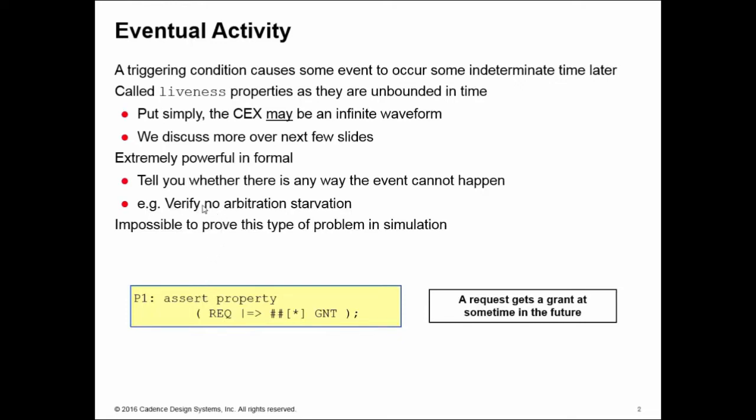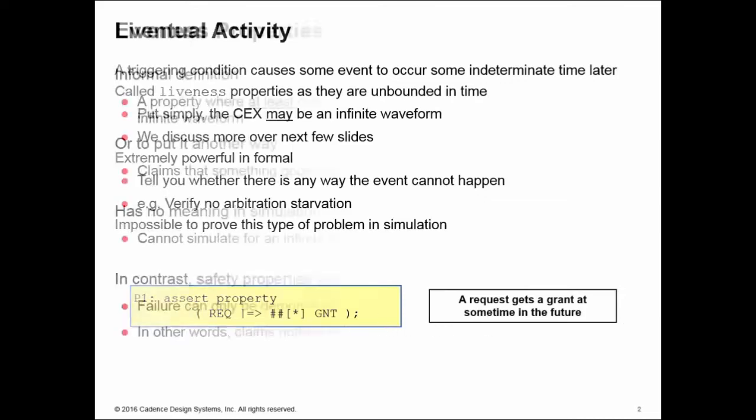Things like grant arbitration starvation. If you've got priority scheme in an arbiter, for example, is it possible that some grant never gets made because there's always something else which can take priority over it?